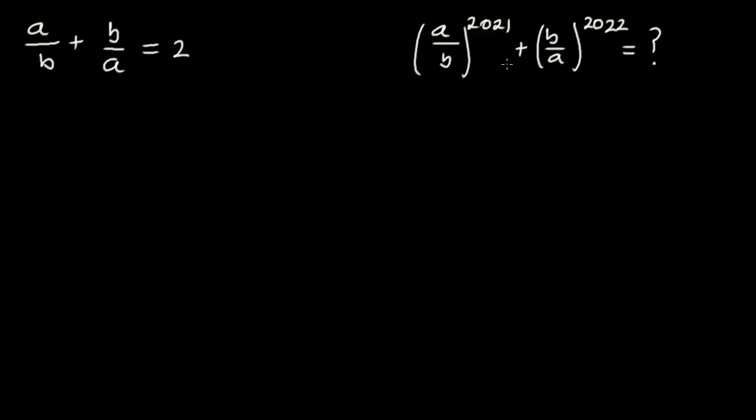We want to depend on this equation to be able to find the value of this. Now we have a over b plus b over a is equal to 2. From here we have fractions and we want to do away with this, so what we do is multiply through by the LCM, and the LCM over here is ab.